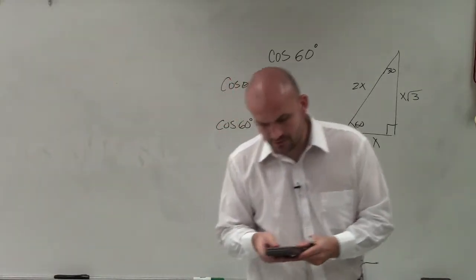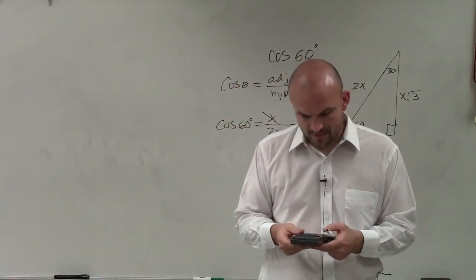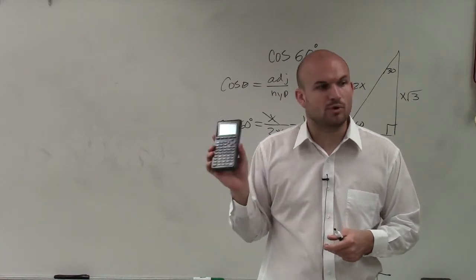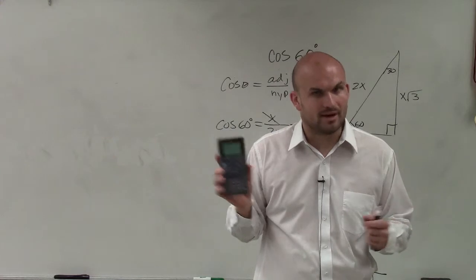If you take your calculator and type in the cosine of 60 degrees, you will get 0.5, which is 1 half.